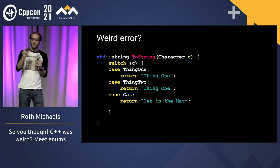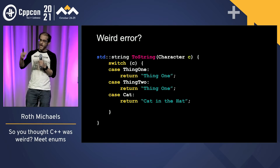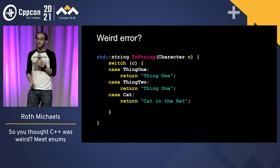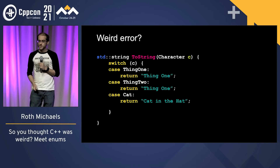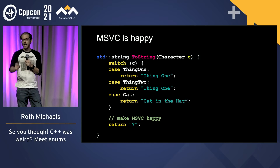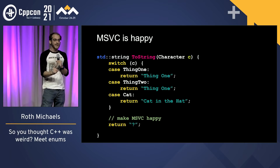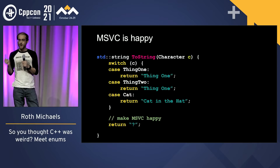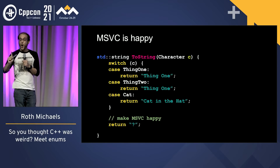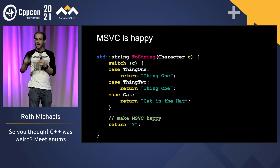Moving on from that pet peeve, let's talk about a weird error. If you have a function passing the Cat in the Hat characters enum with cases for thing_one, thing_two, and cat, MSVC will complain that you don't have a return type. Some developers put in a 'return question mark' with a comment saying 'make MSVC happy.' But MSVC is right — and take this from me, I was a militant Mac user in the 90s. If I'm telling you Microsoft got it right, they are correct here.